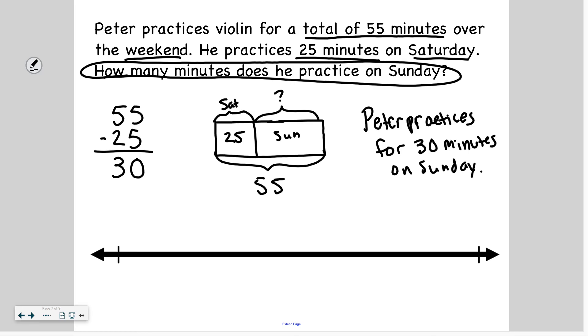So once I take away this 25 from the 55, I'll be left with what is Sunday or what is left over. So 5 minus 5 is 0. 5 minus 2 is 3. So Peter practices 30 minutes on Sunday. Because we subtracted 55 minus 25 to find out what's left over. So I take away Saturday from the weekend, I'm left with Sunday's total. And again, you can use a tape diagram or you can just use the standard algorithm. Whatever works for you. And I use the tape diagram to help me figure out what operation would work best.